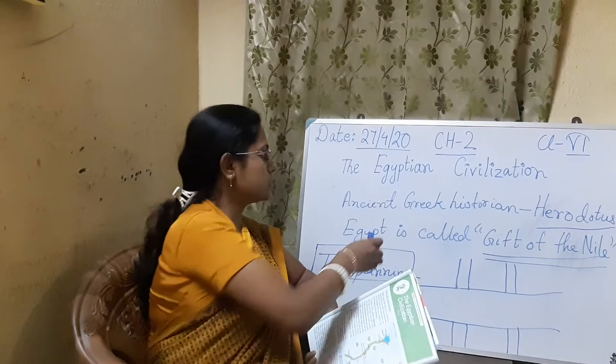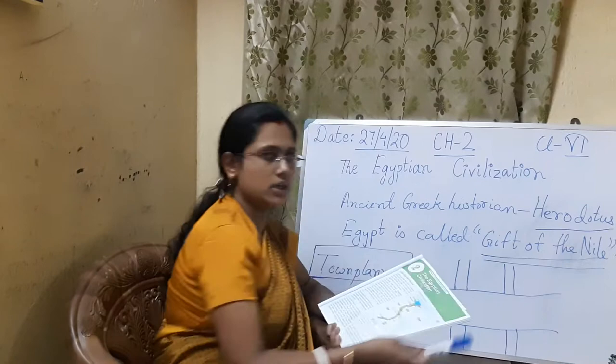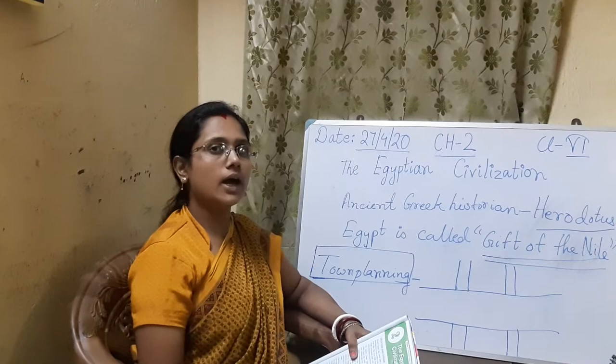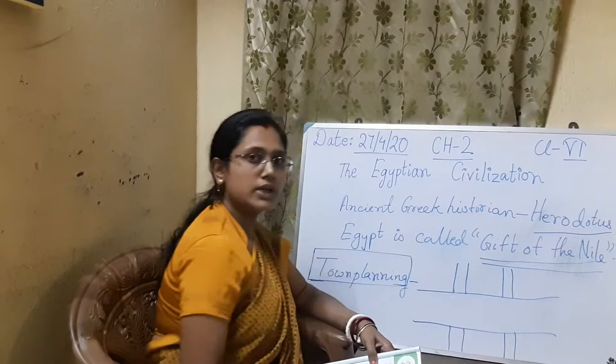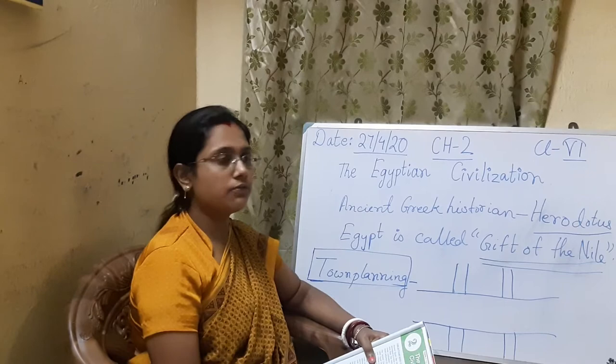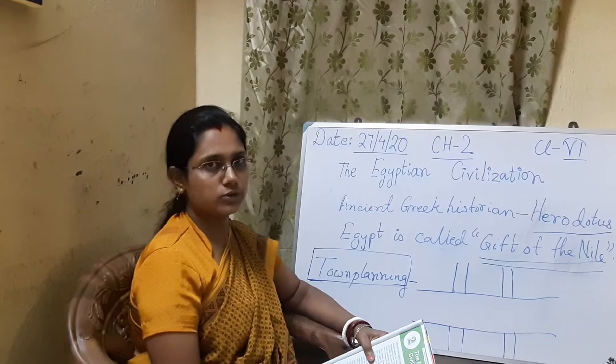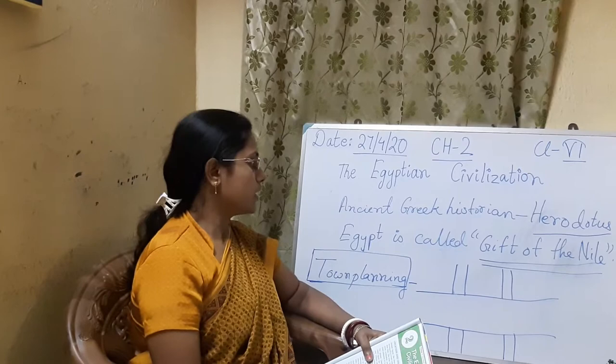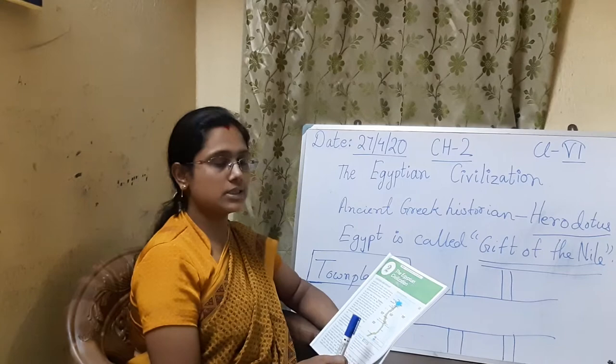A Greek historian, whose name is Herodotus, gave another name for Egypt. He said that Egypt is called 'the gift of the Nile.' That means if the Nile river was not present, then Egypt would not be there in that position.